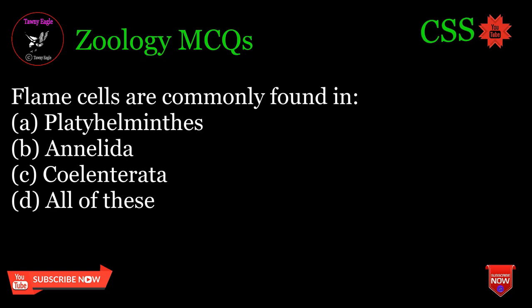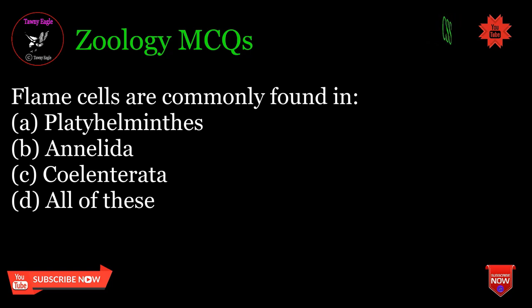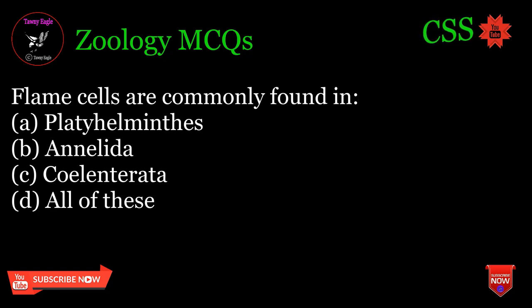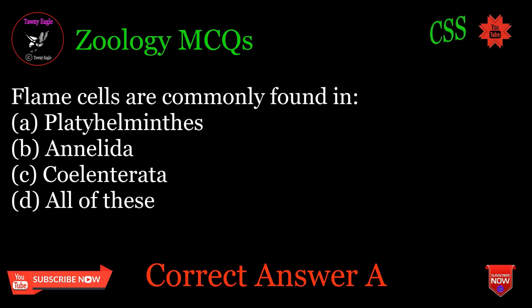Flame cells are commonly found in: A. Platyhelminthes, B. Annelida, C. Coelenterata, D. All of these. Correct answer: A.